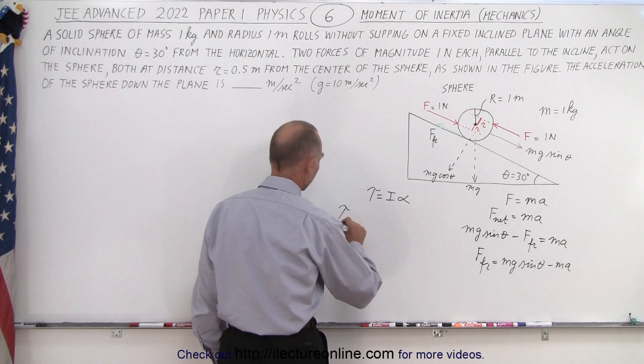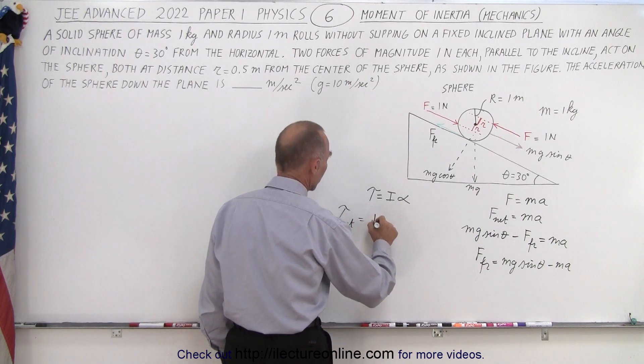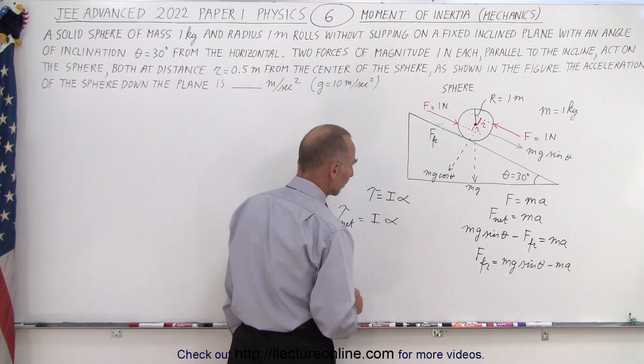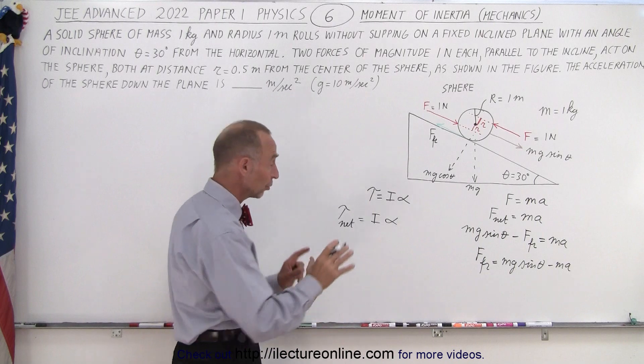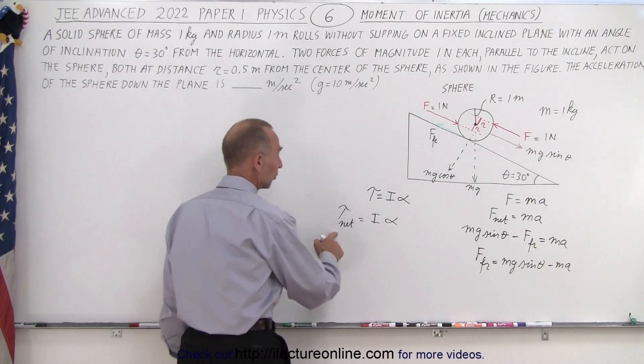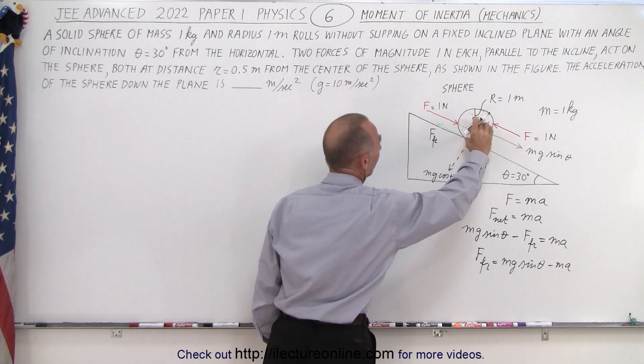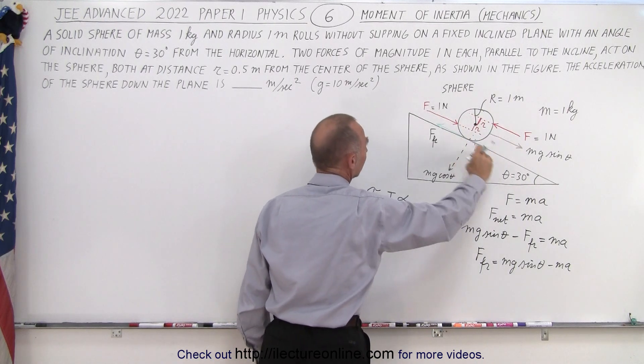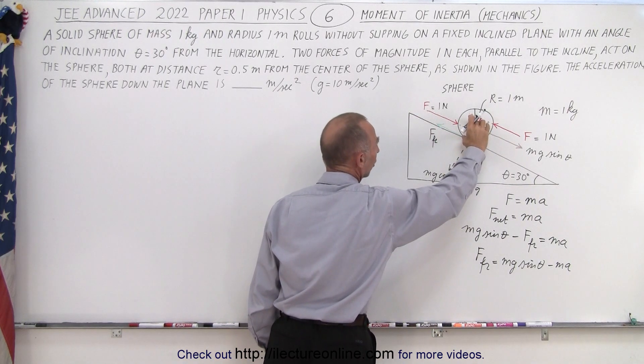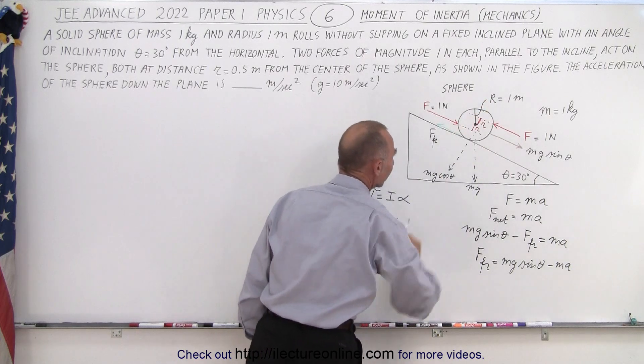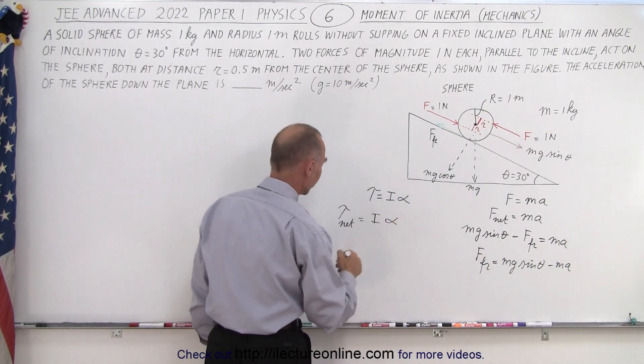So, here we also write net torque equals the moment of inertia times the angular acceleration. Now, when we substitute what we know here, first of all, we have the net torque, which is the force friction acting on a line of action, which is the distance R, big R, one meter away from the center of the sphere.